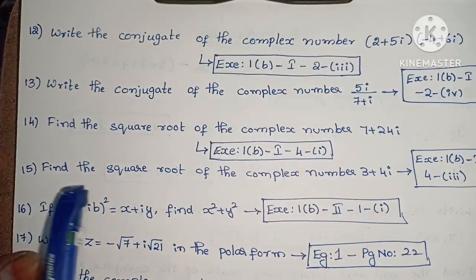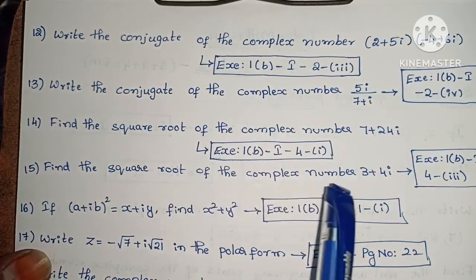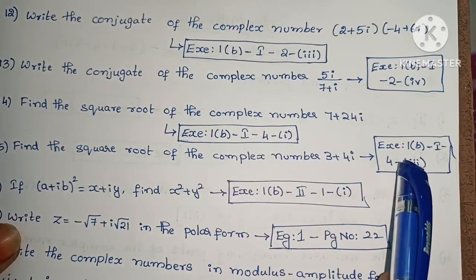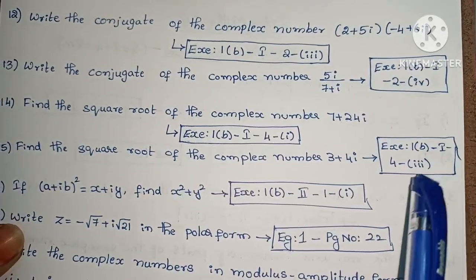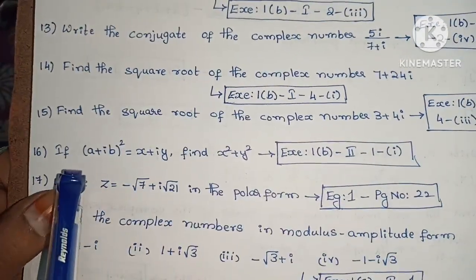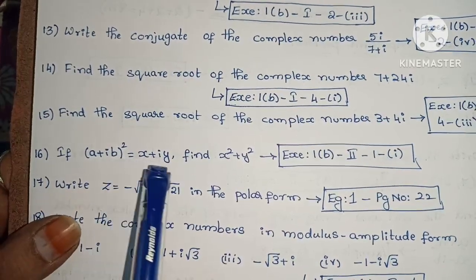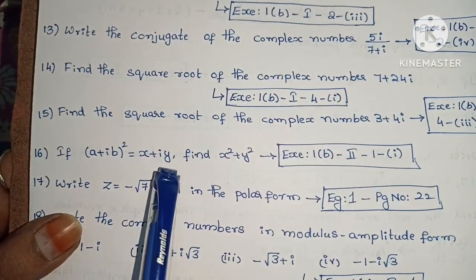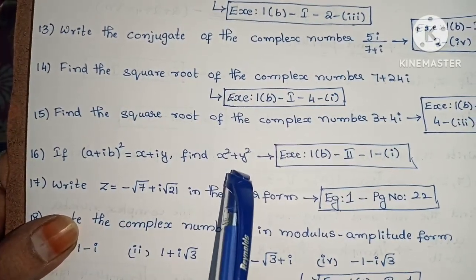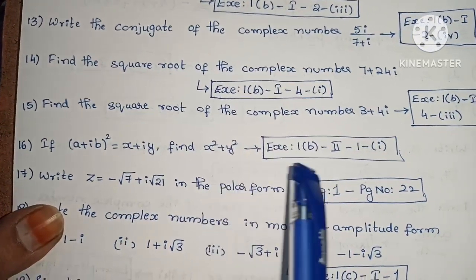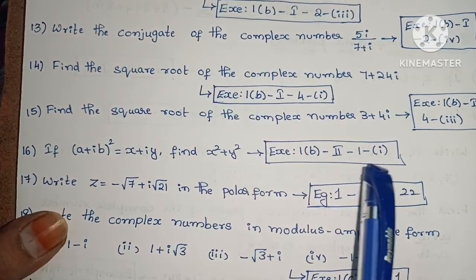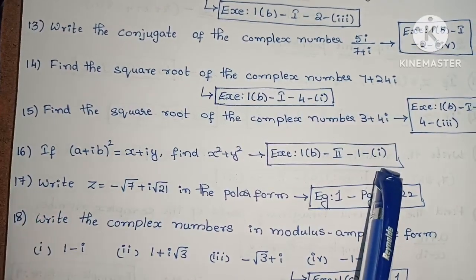Next, find the square root of the complex number 3 plus 4i. Exercise 1 below, first roman, fourth, third one. If (a + ib)² equals x plus iy, find x squared plus y squared. Exercise 1 below, second roman, first, first one.